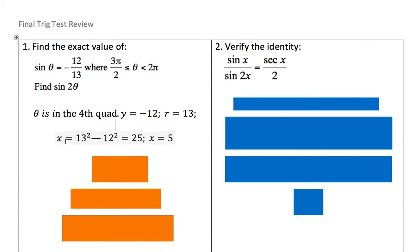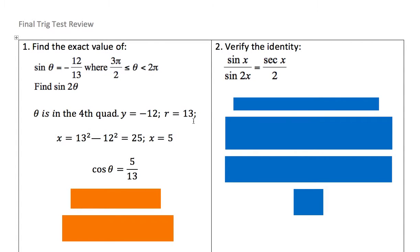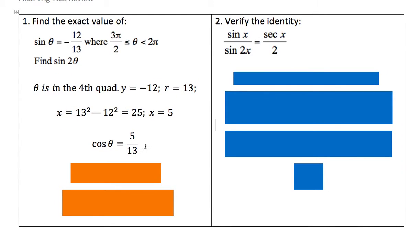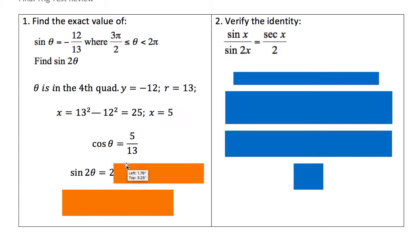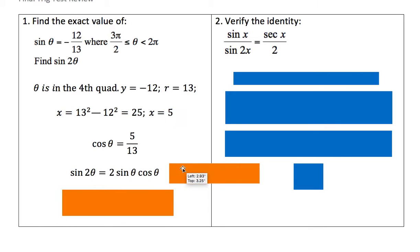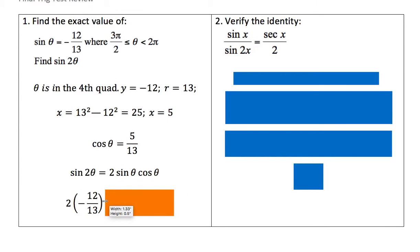When we calculate x, x squared equals 13 squared minus 12 squared. 13 squared minus 12 squared is 25, and the square root of 25 is 5. Now that we know our x, y, and r values, we know that cosine θ = 5/13 (x over r). Now we can plug everything into the double angle identity for sine: 2 times sine θ times cosine θ. Sine θ is replaced with −12/13 and cosine θ with 5/13.